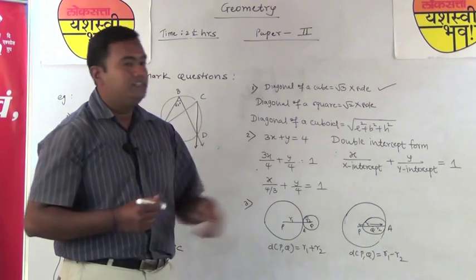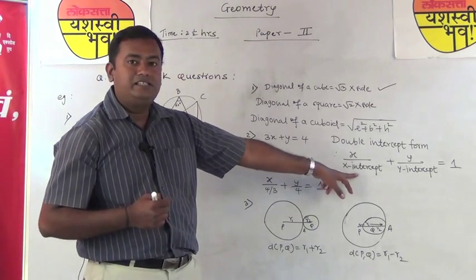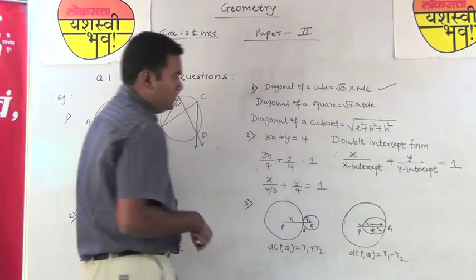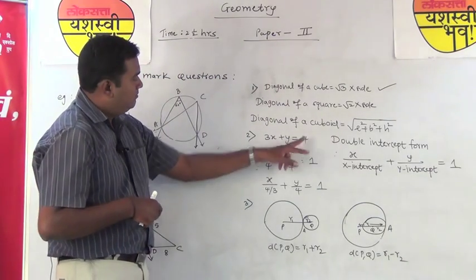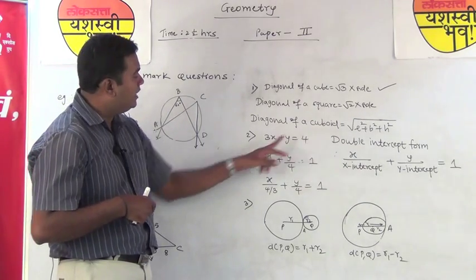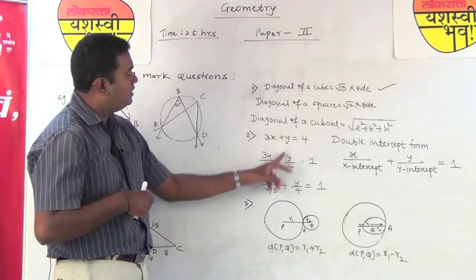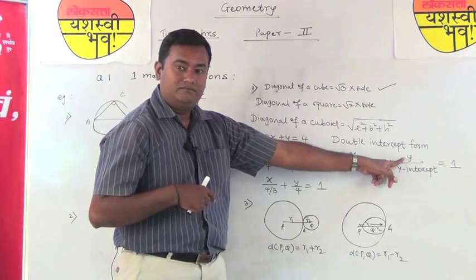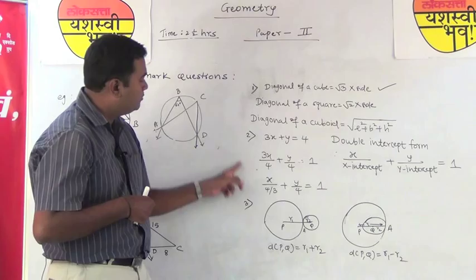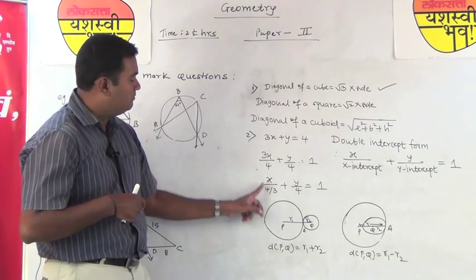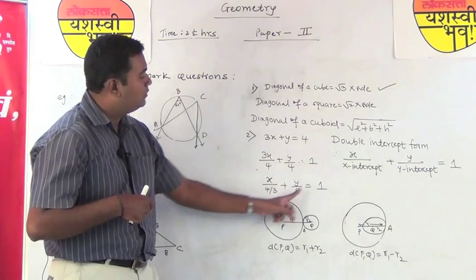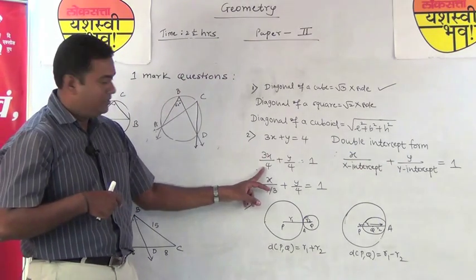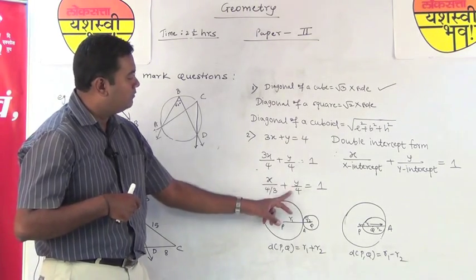Another question: an equation is given and you have to write it in double intercept form, which is x/(x-intercept) + y/(y-intercept) = 1. Since the RHS must be 1 and the given equation has RHS = 4, divide both sides by 4 to get 3x/4 + y/4 = 1. But the numerator in LHS must have only x and y, so bring the 3 down. The final answer becomes x/(4/3) + y/4 = 1. Don't leave the answer with 3x in the numerator.